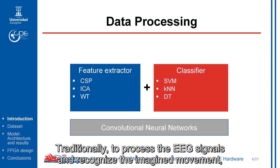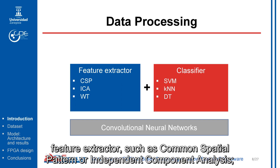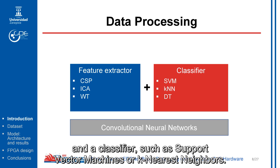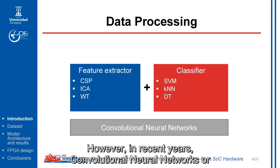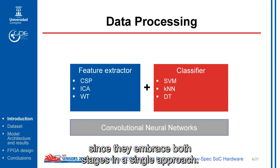Traditionally, to process EEG signals and recognize the imagined movement, a combination of two types of algorithms is used: a feature extractor, such as a common spatial pattern or independent component analysis, and a classifier, such as support vector machines or k-nearest neighbors. However, in recent years, convolutional neural networks, or CNNs, have demonstrated the capability to process EEG signals, since they embrace both stages in a single approach.